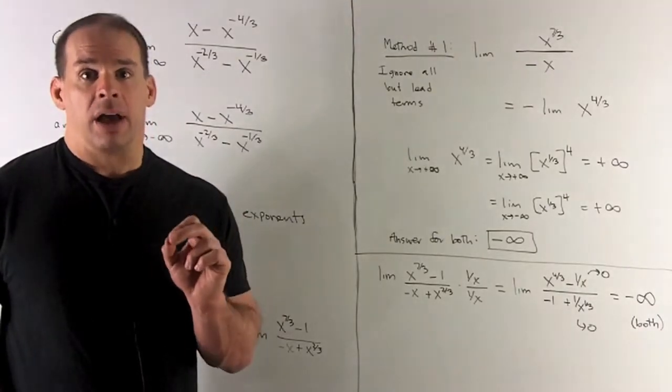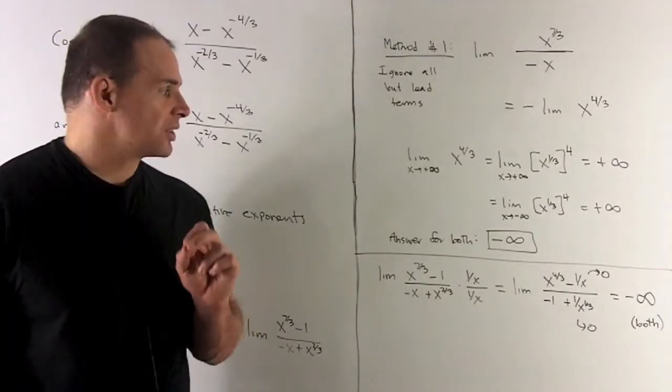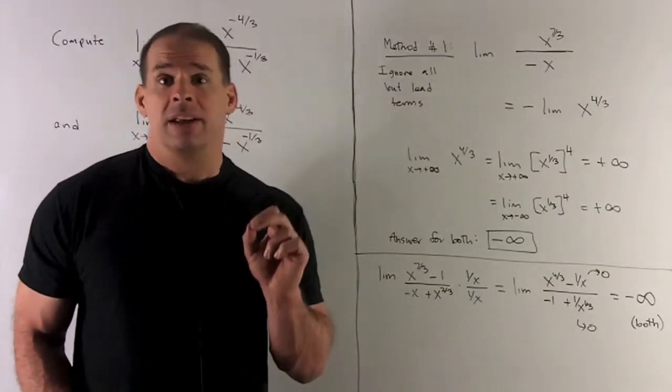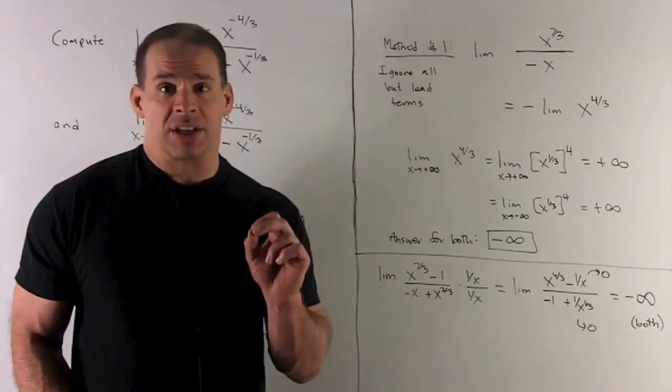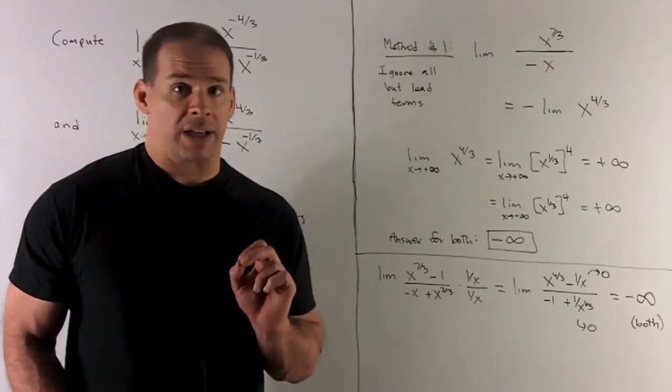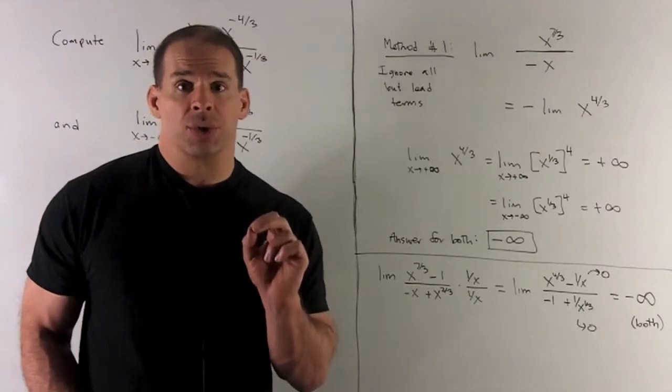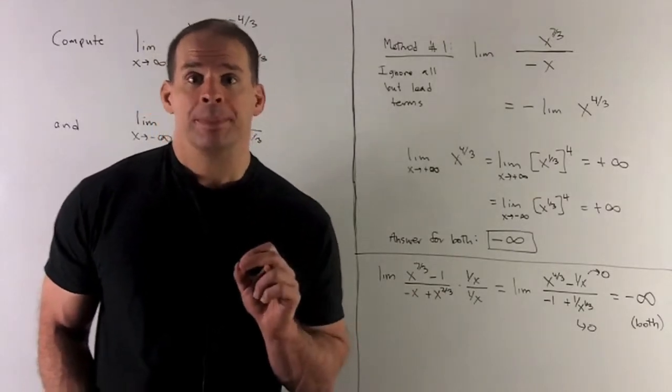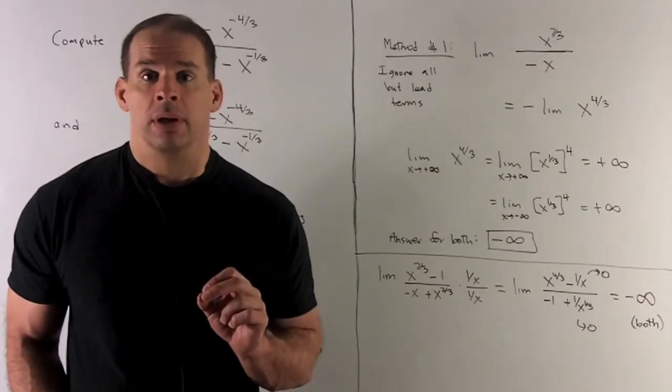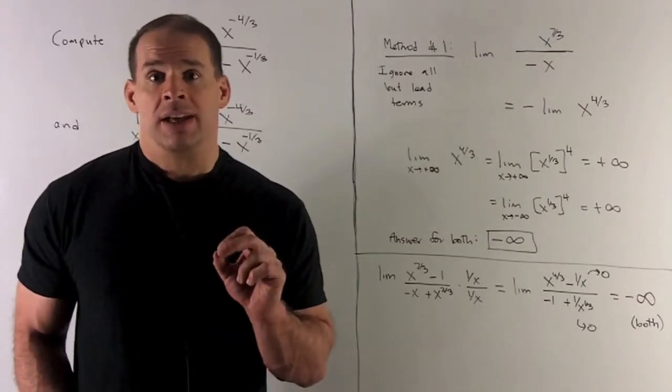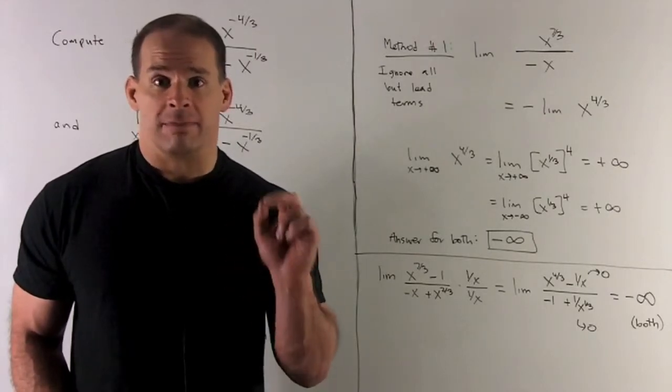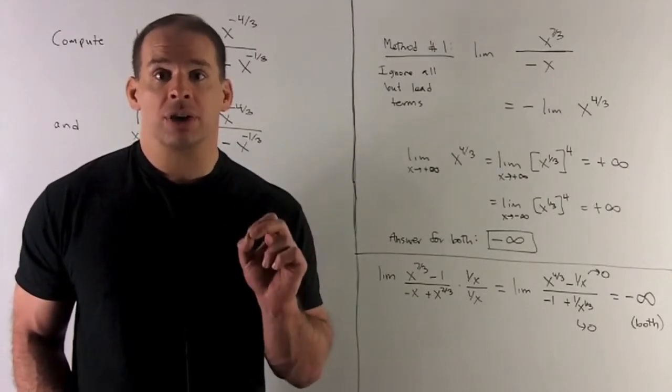What's that going to turn into? In the denominator, I'll have minus 1 plus 1 over x to the 1 third. And in the numerator, I'll have x to the 4 thirds minus 1 over x. As x goes to plus or minus infinity, 1 over x goes to 0, 1 over x to the 1 third goes to 0. So what I'm going to be left with is taking the limit as x goes to plus or minus infinity of minus x to the 4 thirds.